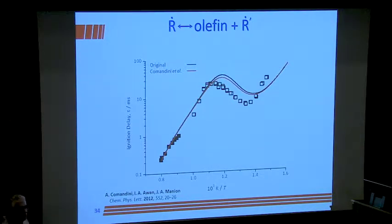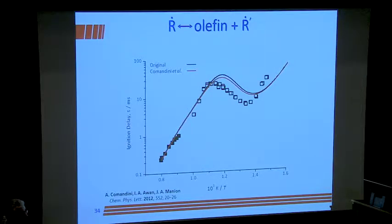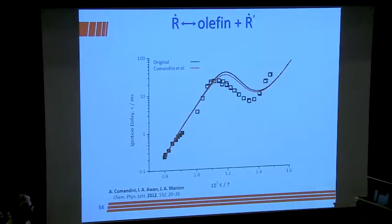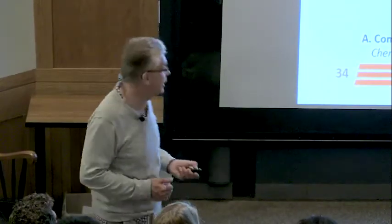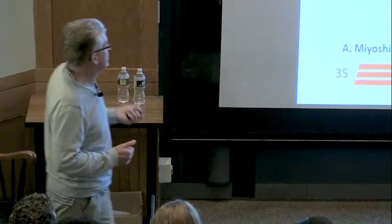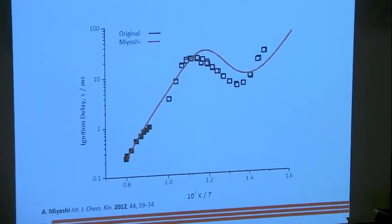There was just a small change in the rate constants between our estimates and what was measured by Comandini. It makes very little difference at high or low temperature — it's really in the NTC region that it's happening. You see highest sensitivity there in that intermediate temperature regime, because that's where you have competition between alkyl radical decomposition and addition to molecular oxygen. We then take the rate for alkyl radical plus O2 giving RO2 from Miyoshi's calculations published in 2012, and that made no difference to the reactivity.